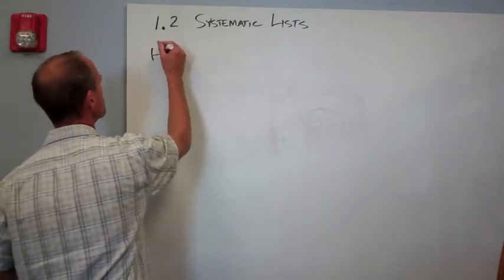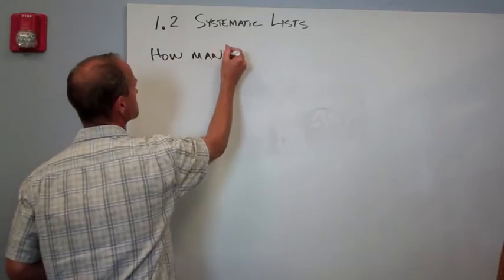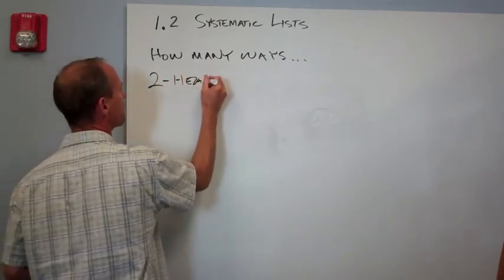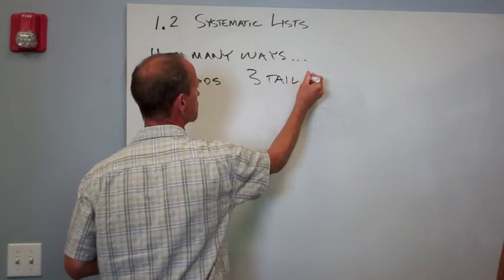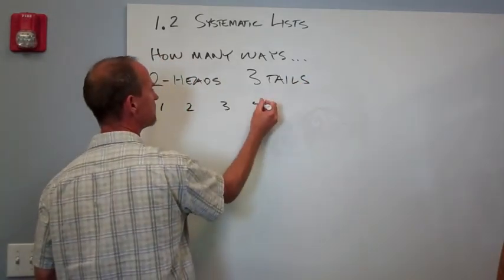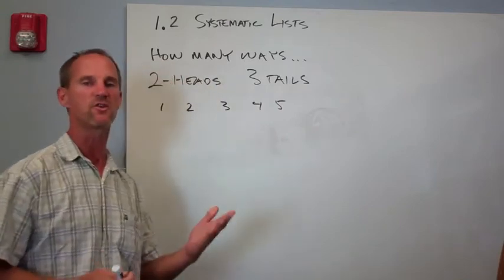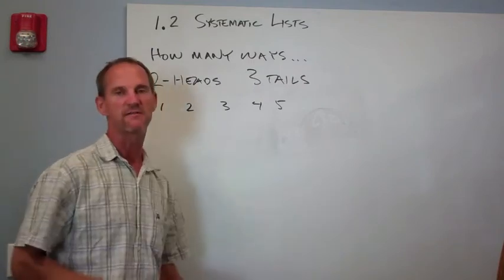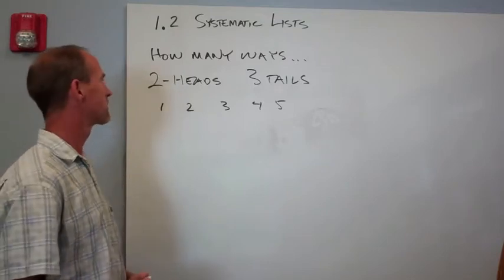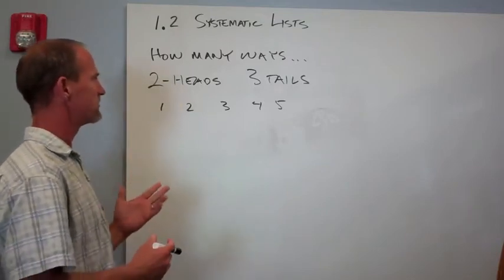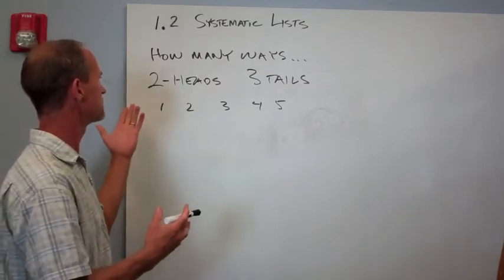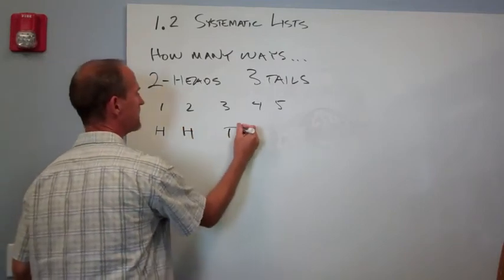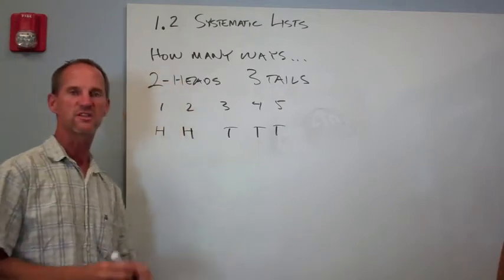All right, so I've got a little problem here. How many different ways is there to have two heads and three tails if we toss five coins? Imagine coins one, two, three, four, five. Or we could be tossing just one coin five times. But how many different ways can you wind up with two heads and three tails? So, step number one would be to start from one extreme or the other. I'm just going to start with two heads like this, and then three tails. So that's my most extreme starting point.